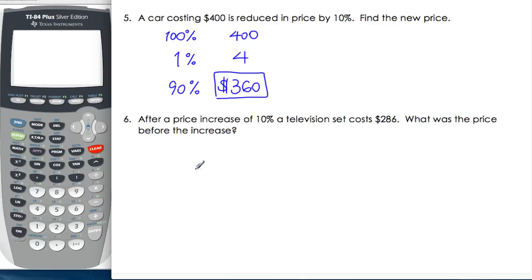So, let's have a look. After a price increase of 10%, a television set costs $286. A little bit different here. We're not given 100%. This time, it's after a price increase, so therefore, we actually know 110% is $286. Alright, so the setup's always the same. Now we go back down to 1%.